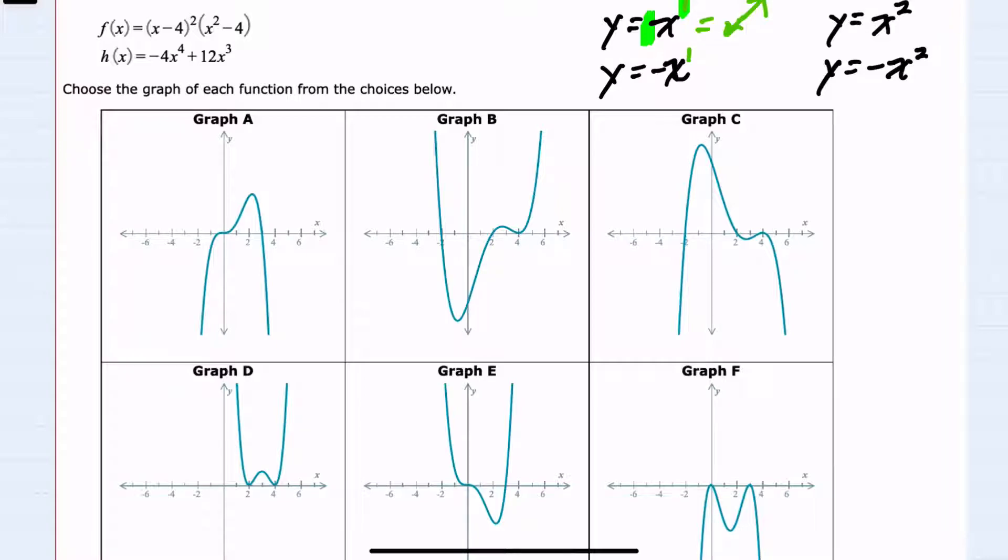When we have an odd degree and a negative leading coefficient, we have the opposite. That line is up to the left, down to the right. When we look at positive and even, even if the degree is higher, a 4, a 6, and so on, the end behavior would still be the same as x squared, which is up to the left and up to the right. When I have a negative coefficient and even, all of those functions have end behavior of down to the left and down to the right.